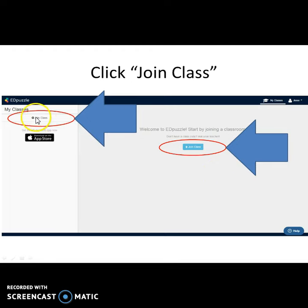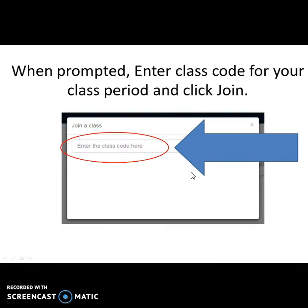Once you click join class it's going to ask for a code kind of like with Kahoot or Nearpod if you remember Nearpod. So once it gives you the prompt it'll be another little pop-up, you're going to enter the class code for your class period and click join.